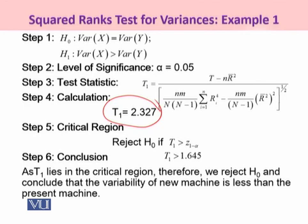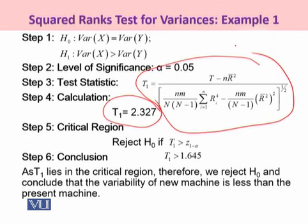Now, according to your steps under the calculation, we have calculated 2.327. Now this value is to be compared with z. You know why? Because if you see, this T₁ is in fact a standardized variable—you have made a variable in the mean and divided by the standard error.